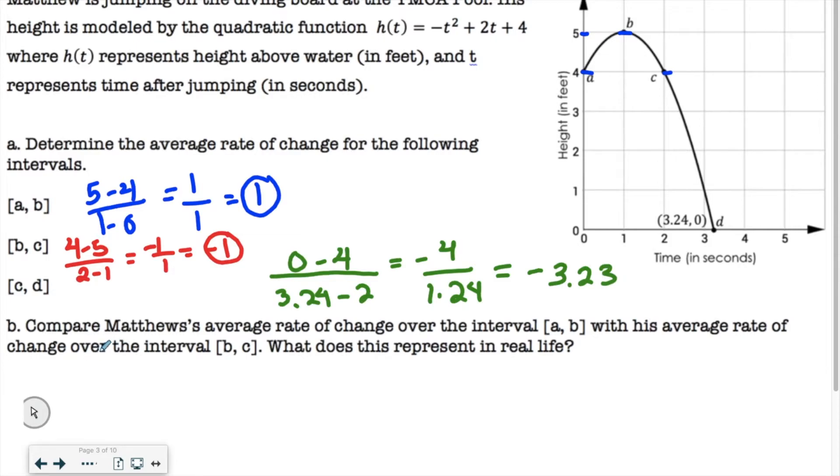And then down here, it says compare Matthew's average rate of change over the interval from A to B with his average rate of change over the interval of B to C. So we're looking at A to B average rate of change, and then looking at B to C. So we can tell that right away, it was the same amount of slope, same amount of change. However, one was positive and one was negative.